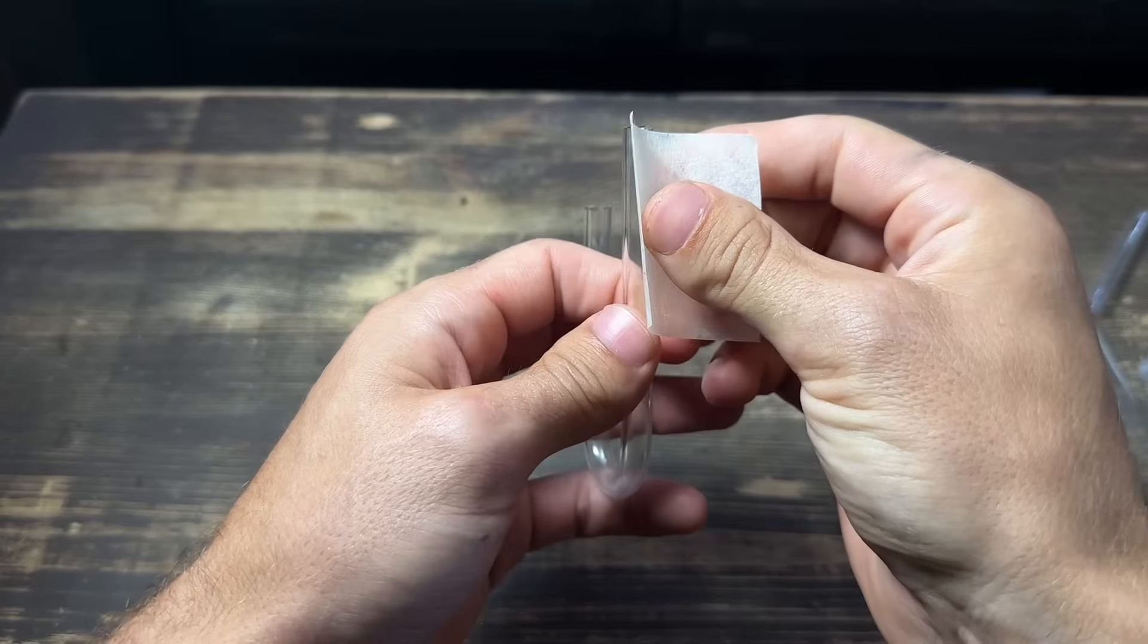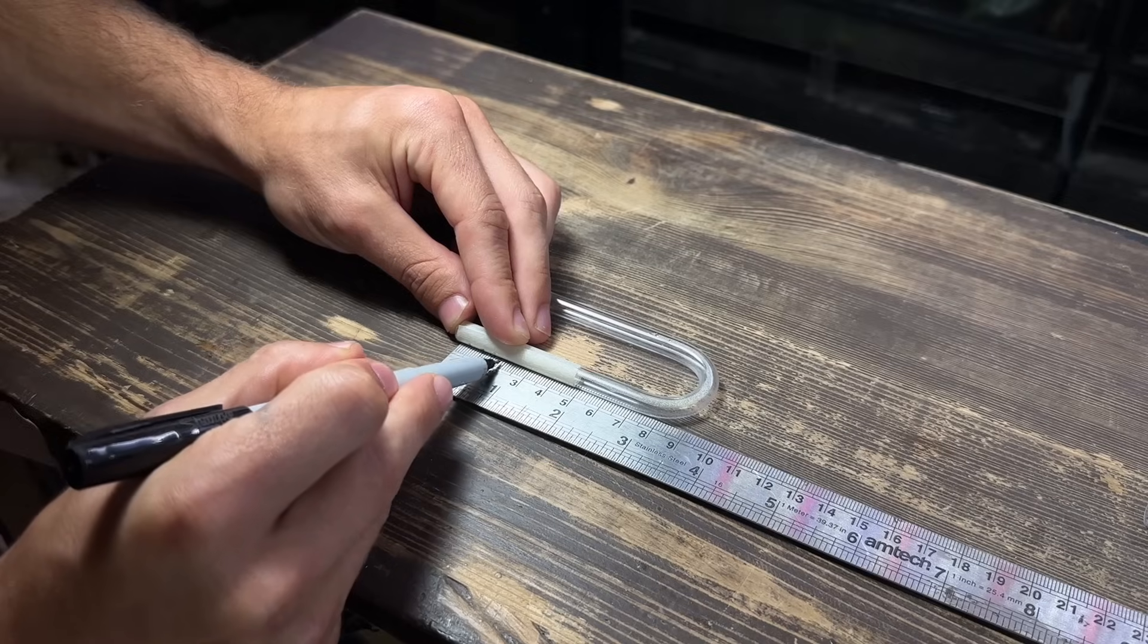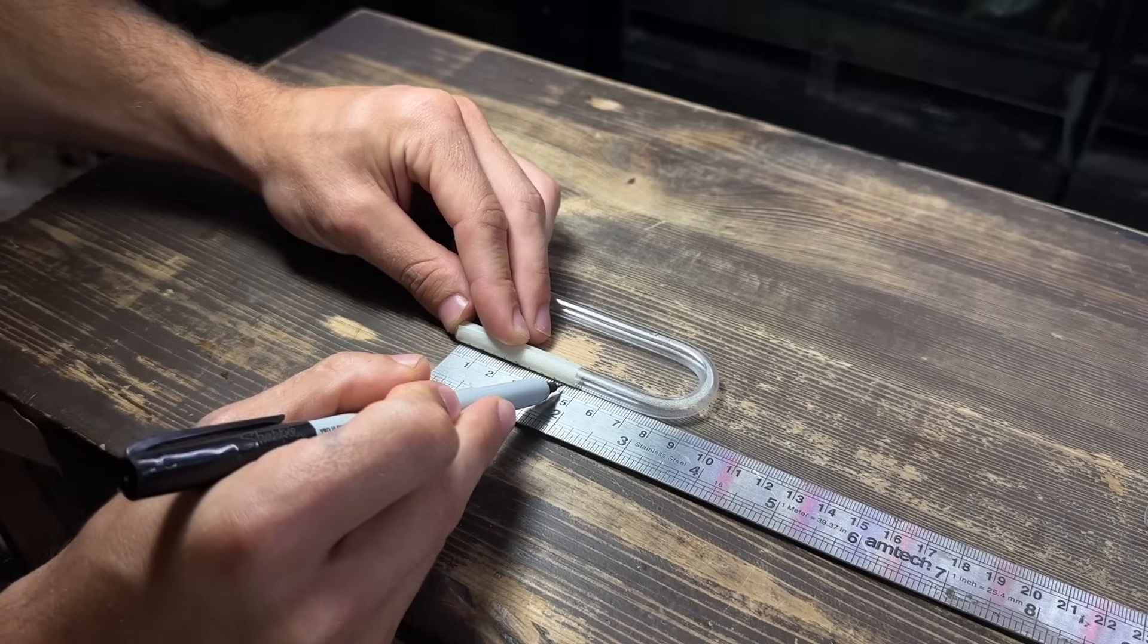I'll start by wrapping some masking tape around the part that I'm going to cut. I'll then mark out where the slits are going to be. I'm doing half a centimeter space in between each.